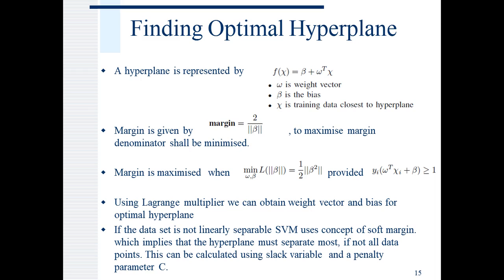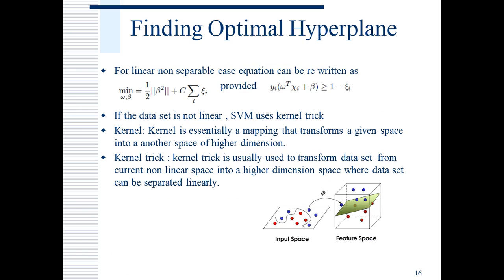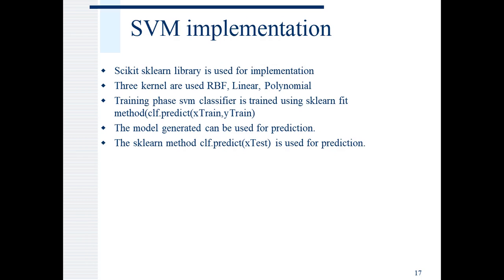Now the case can arise that data sets are not linearly separable. In this case, SVM introduces concept of soft margin. Soft margin implies that the hyperplane must separate most if not all data points. Slack variable and penalty parameter are introduced. Here, C is penalty and epsilon is the slack variable. If the data points are not linearly separable, SVM uses kernel trick to transform input data to a higher dimension where it can be linearly separable. This is shown in the figure. Here, the input data points are not linearly separable, so they are transformed using kernel trick into a higher dimension where it can be clearly seen that those are linearly separable.